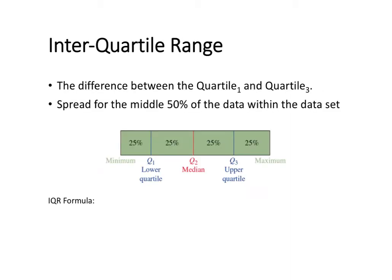The interquartile range is slightly different to the range and it measures the difference between quartile 1 and quartile 3. The difference between quartile 1 and quartile 3 represents 50% of the data, so it tells us over what range the middle 50% of the data is spread over. We can use the formula: interquartile range, or IQR, is equal to quartile 3 minus quartile 1.